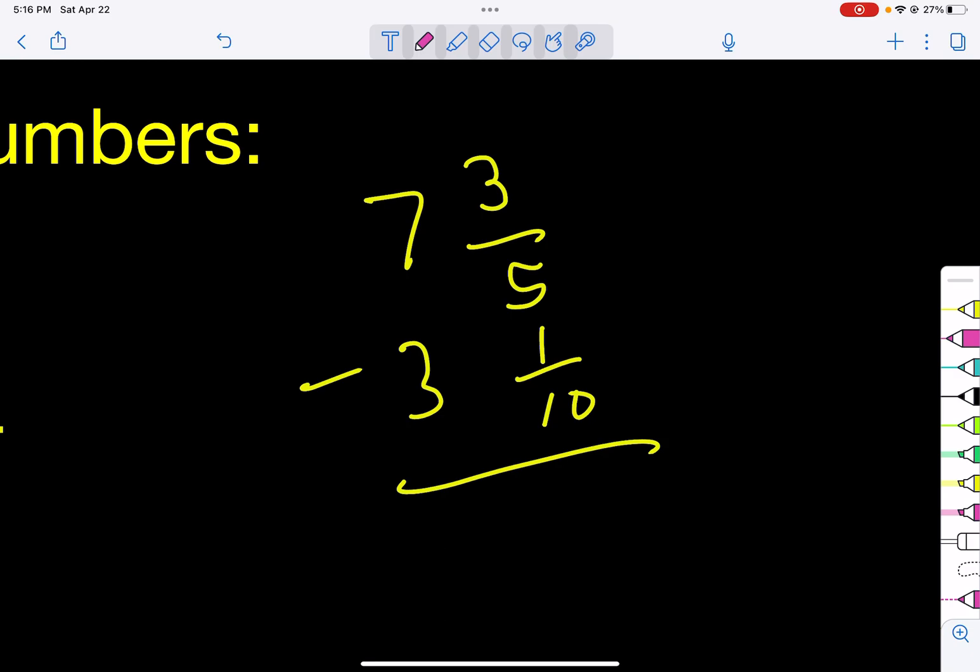So think of what can I multiply 5 by to turn it into 10? Well, that's 2. Now when we do that, that becomes 6 tenths.